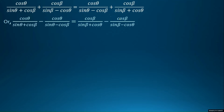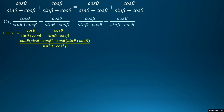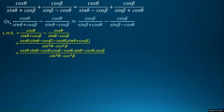Now our identity becomes rearranged, and we will take the LHS. We take the LCM on the LHS and simplify. Then we multiply inside the bracket by cos θ in the first term and in the second term as well, and we will get this result.